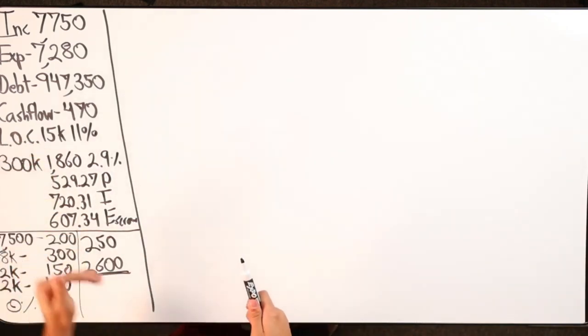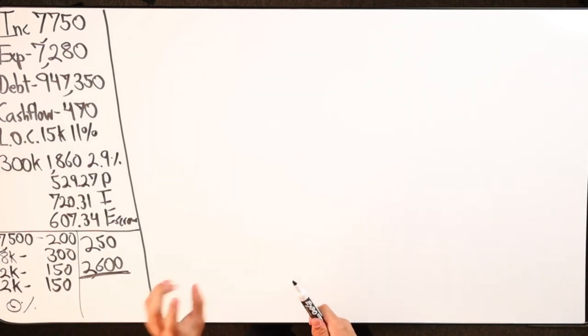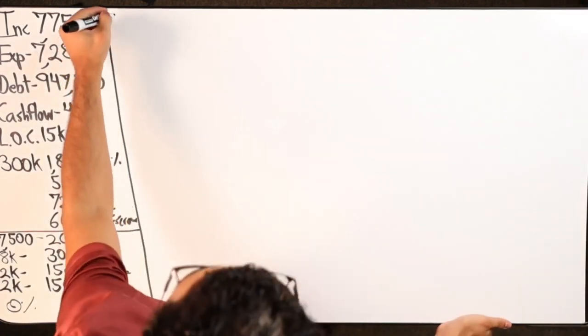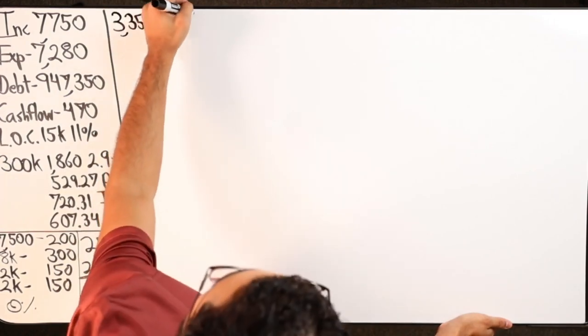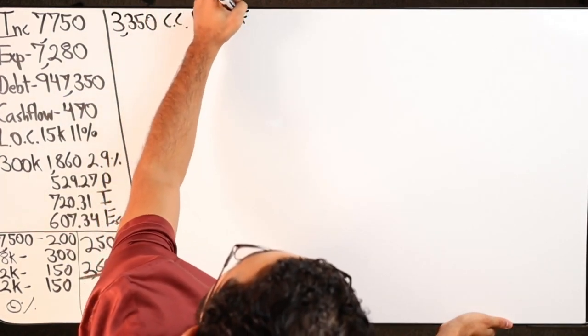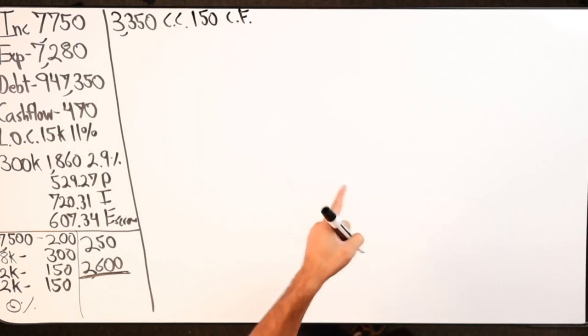So the total chunk from the personal line of credit, a portion of it is going to be the $2,600, $250, and the $500. So that puts me at $3,350 is going towards credit cards, which I'll get a $150 cash flow gain from that move.